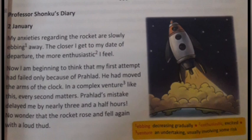Professor Shanku says: 'I am beginning to think that my first attempt had failed only because of Pralad. He had moved the arms of the clock. In a complex venture like this, every second matters. Pralad's mistake delayed me by nearly 3 and a half hours. No wonder the rocket rose and fell again with a loud thud.' The rocket's first attempt failed because of Pralad's small mistake.